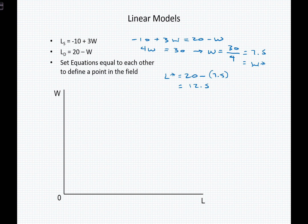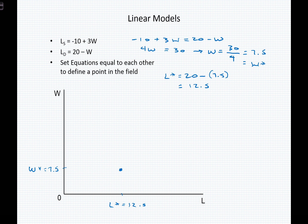So somewhere along the wage axis I'm going to find a value of 7.5, and somewhere on the labor axis I'm going to find a value of 12.5. That gives me W-star at 7.5 and L-star at 12.5, which is a point in the field — the equilibrium point. I know labor demand and labor supply both go through that point. I don't yet know where they're starting from, and they don't stop there either — they continue to pass through this entire Cartesian coordinate. But I've identified a point within my model.